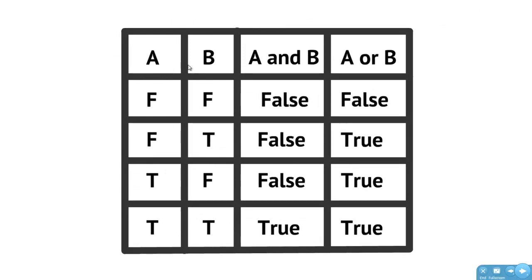Here we have A and B, which are just representative of some Boolean expression that resolves down to a true/false value. This truth table defines what happens. If A and B are both false, then the whole expression is false. If one is false and the other is true with the AND operation, the overall expression is still false. The only time the AND operator returns true is if both A and B are true.